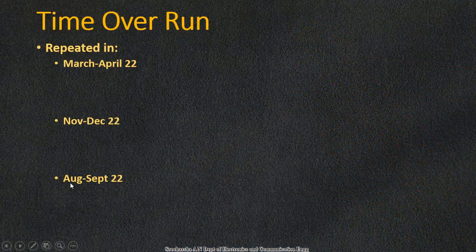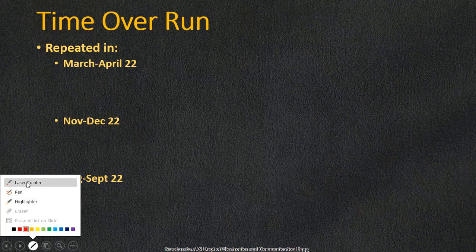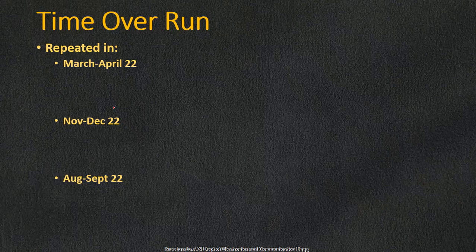The first question on the top priority is time and cost overrun. When we look at time overrun, it is repeated in the March/April 2022 question paper, the November/December 2022 question paper, and the August/September 2022 question paper.